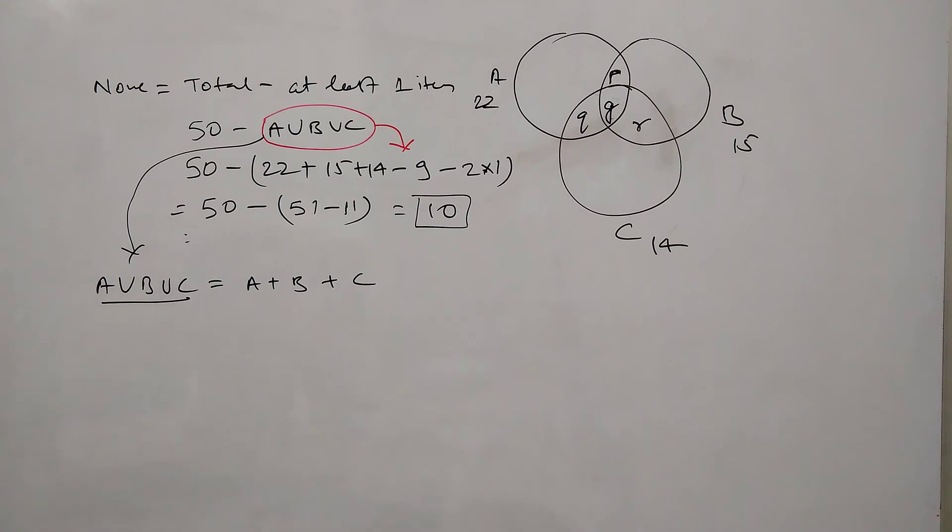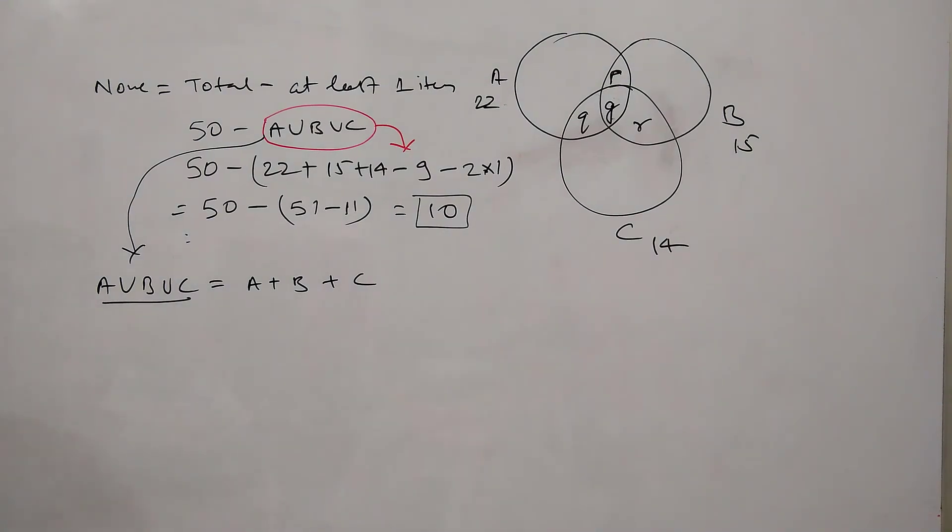So now if you see in the diagram, if we add A and B, let's forget about C for this moment. So if we add A and B, P is getting added twice, in A as well as in B. And in the union of these three we need to count them just once, we cannot count them twice, so we need to subtract P once. Similarly P is getting added in A as well as in C, and if you see R, R is getting added in B as well as in C.